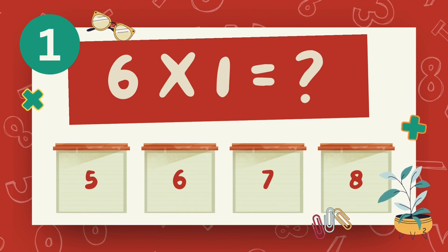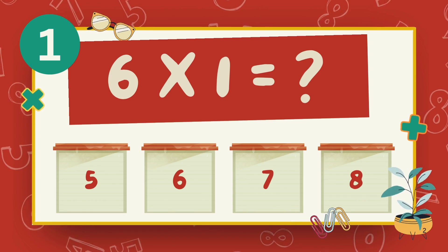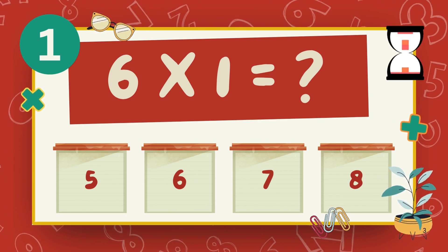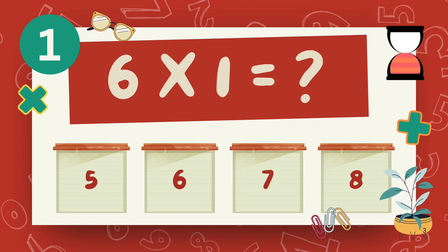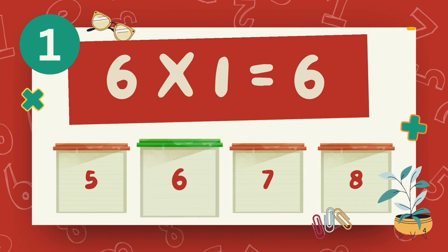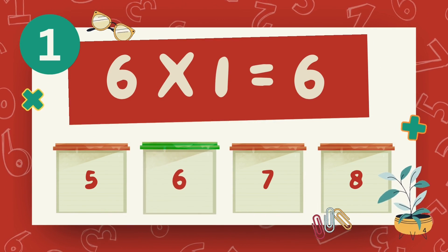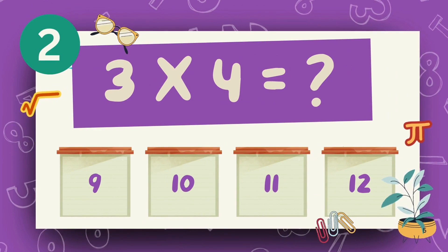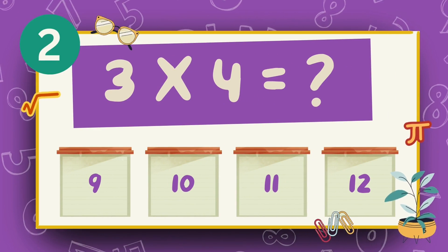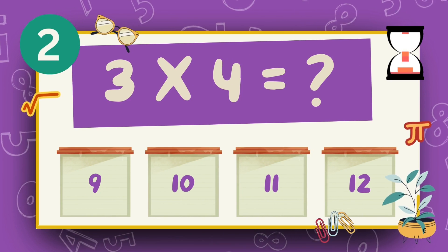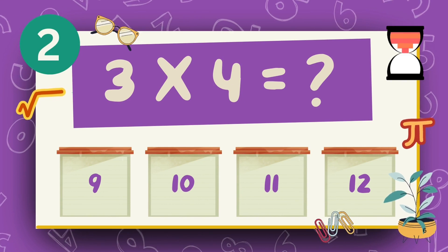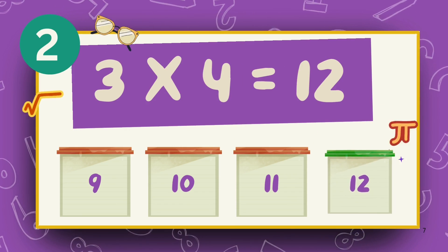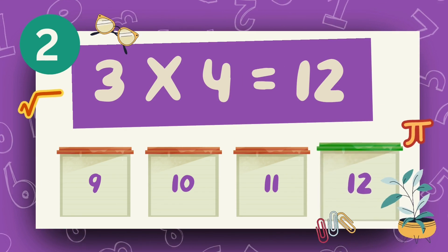What is 6 multiply 1? The answer is 6. What is 3 multiply 4? The answer is 12.